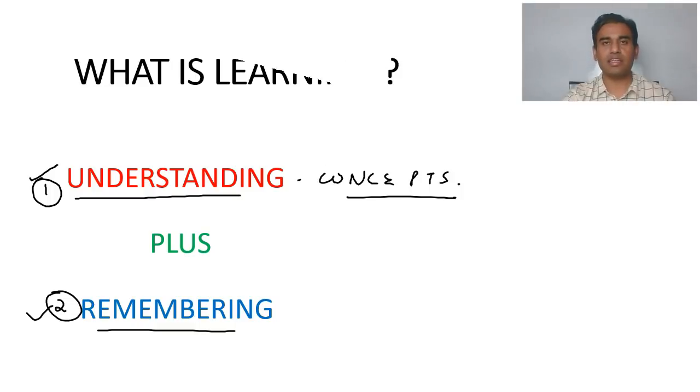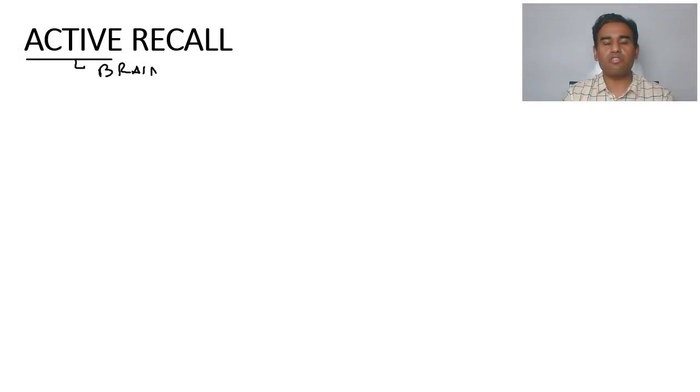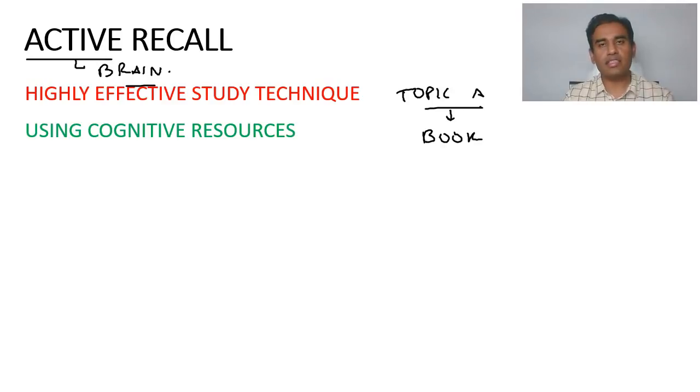Let's start with the first technique that is known as Active Recall. Active here means the active use of your brain or your cognitive powers. It is a highly effective evidence-based study technique which uses your cognitive resources, your thinking process, your brain. Now how to practically approach this active recall technique is that once you choose any topic which you need to study, suppose you have chosen topic A and you study it with the help of your book, a textbook. Now once you have read this topic for supposedly half an hour, then after reading this topic, you close the book. And then you have two options.